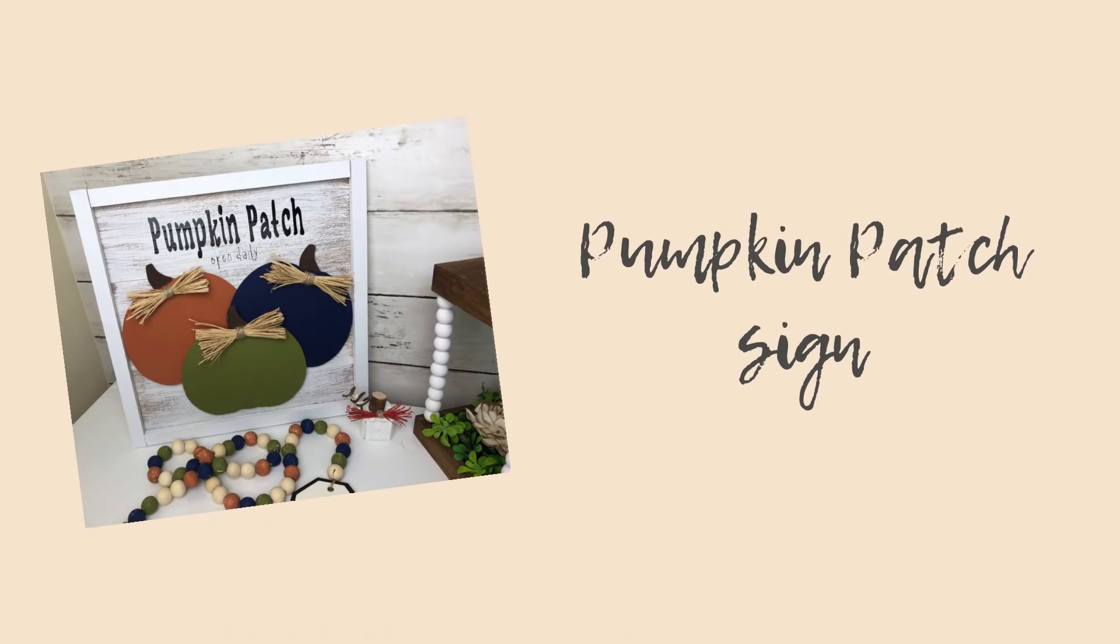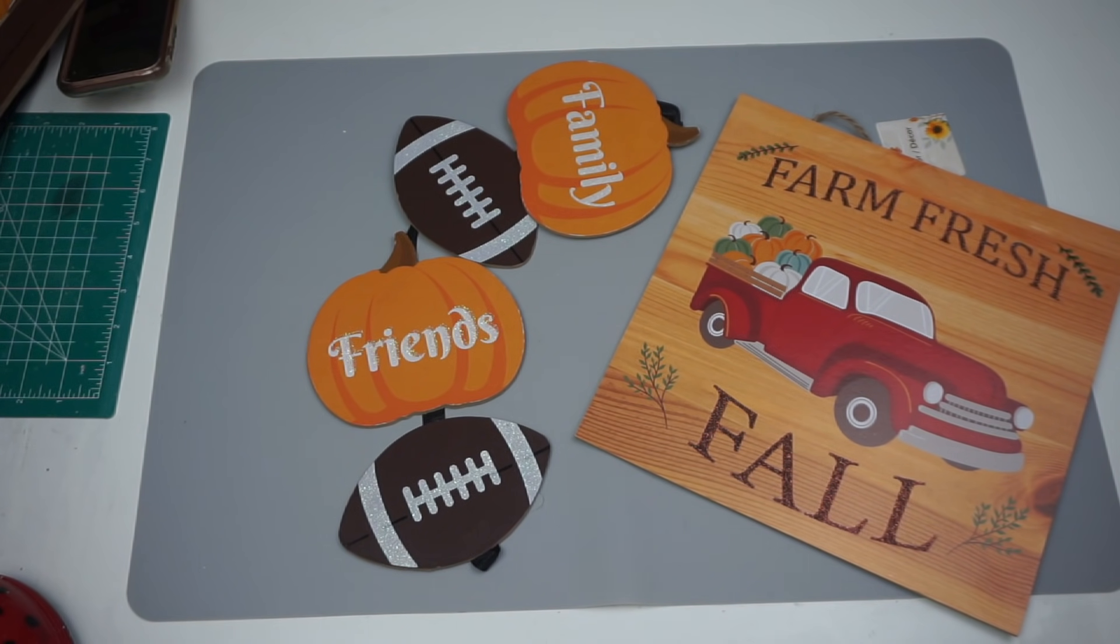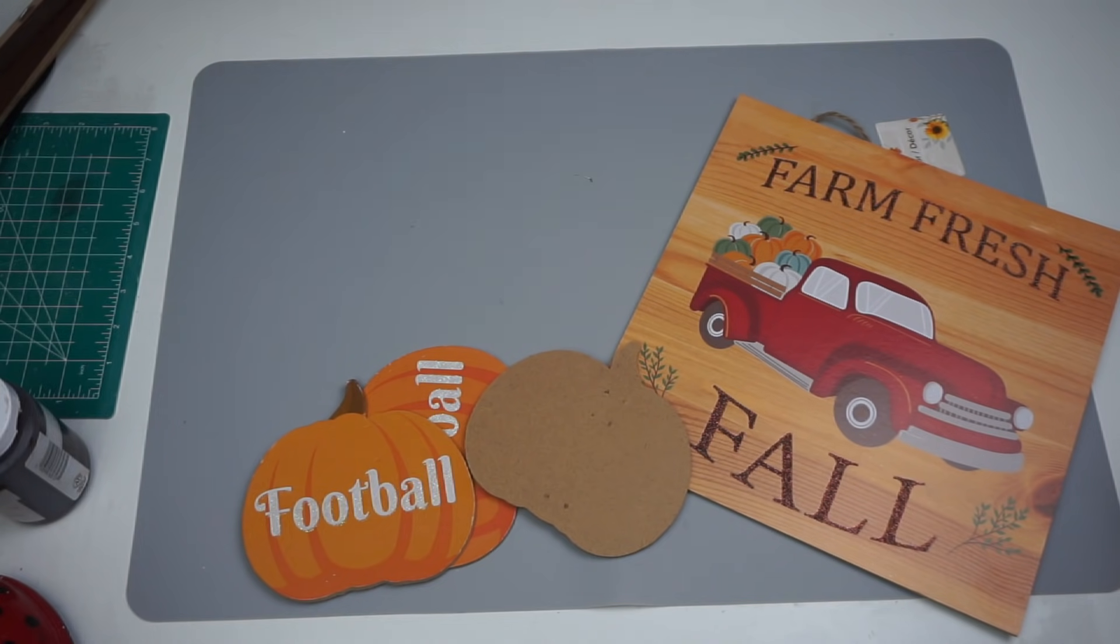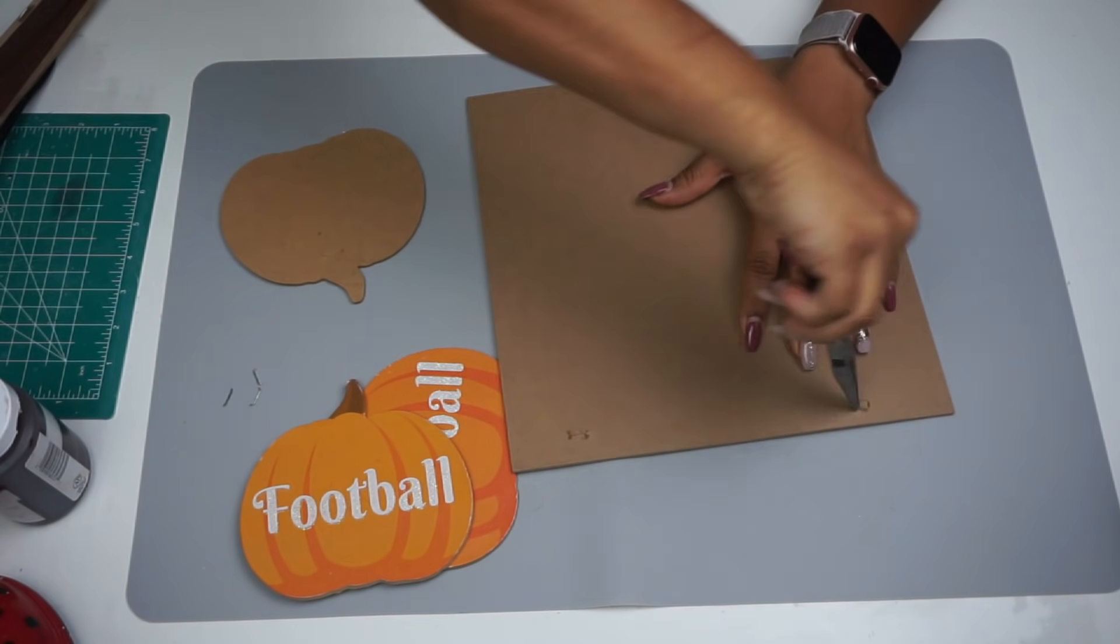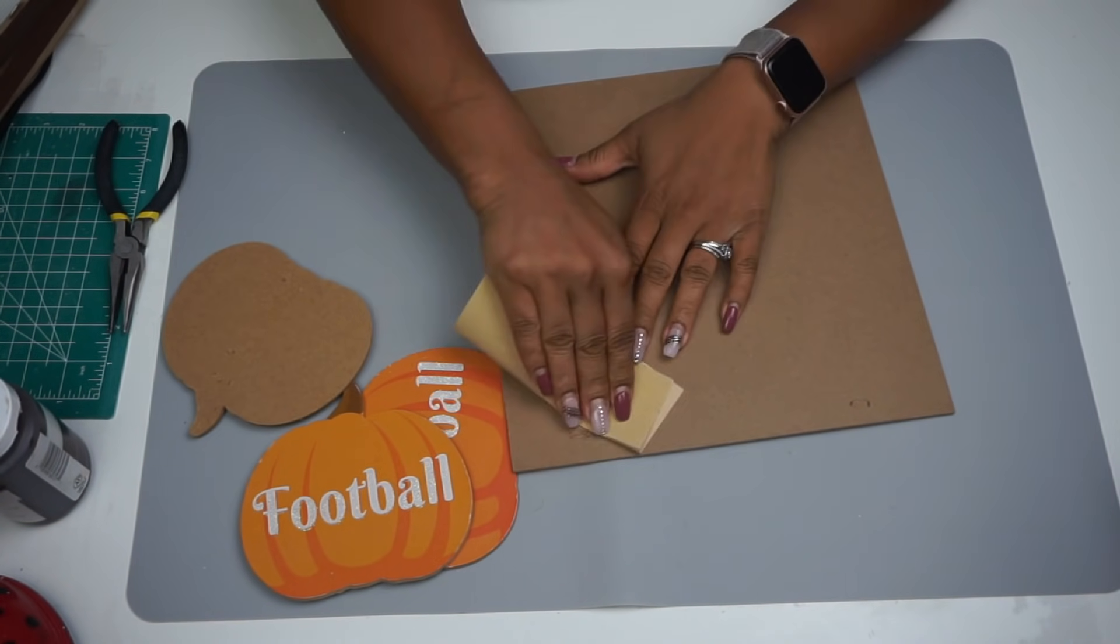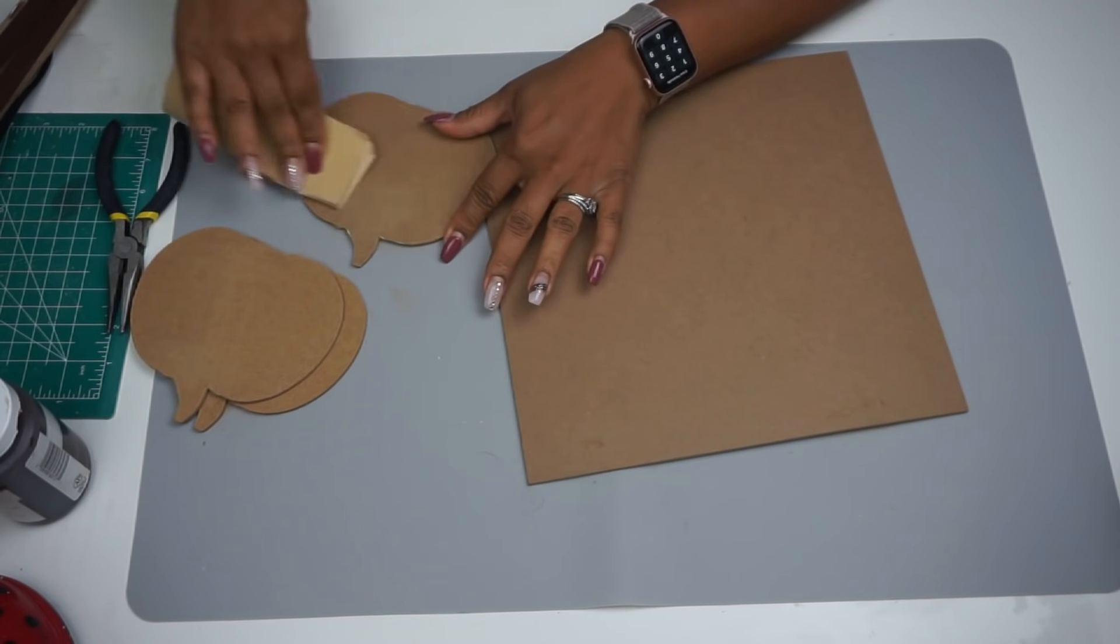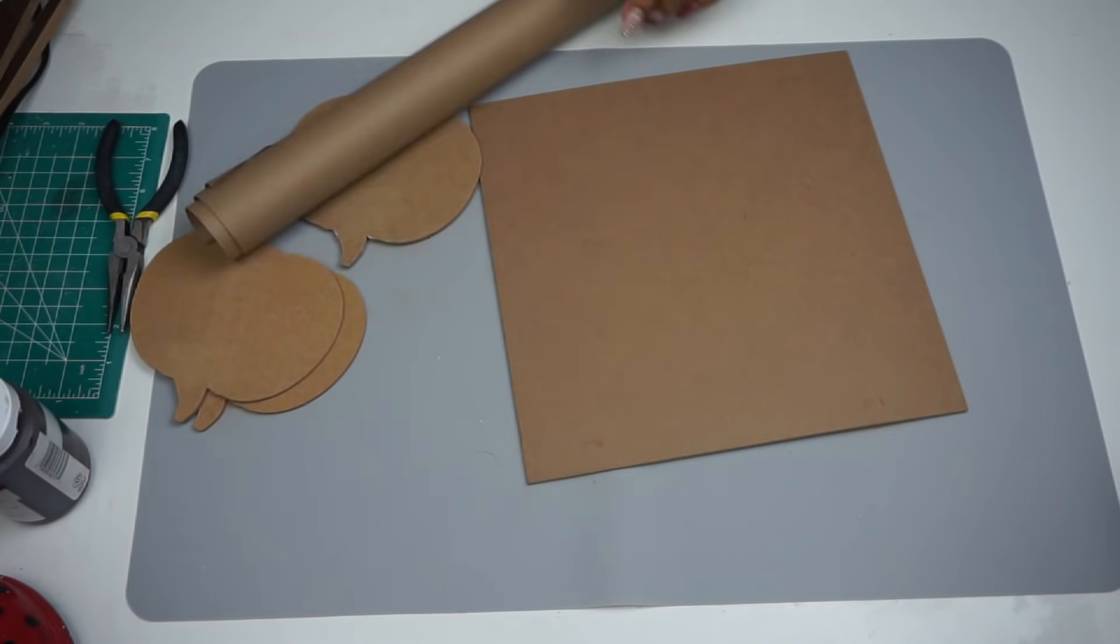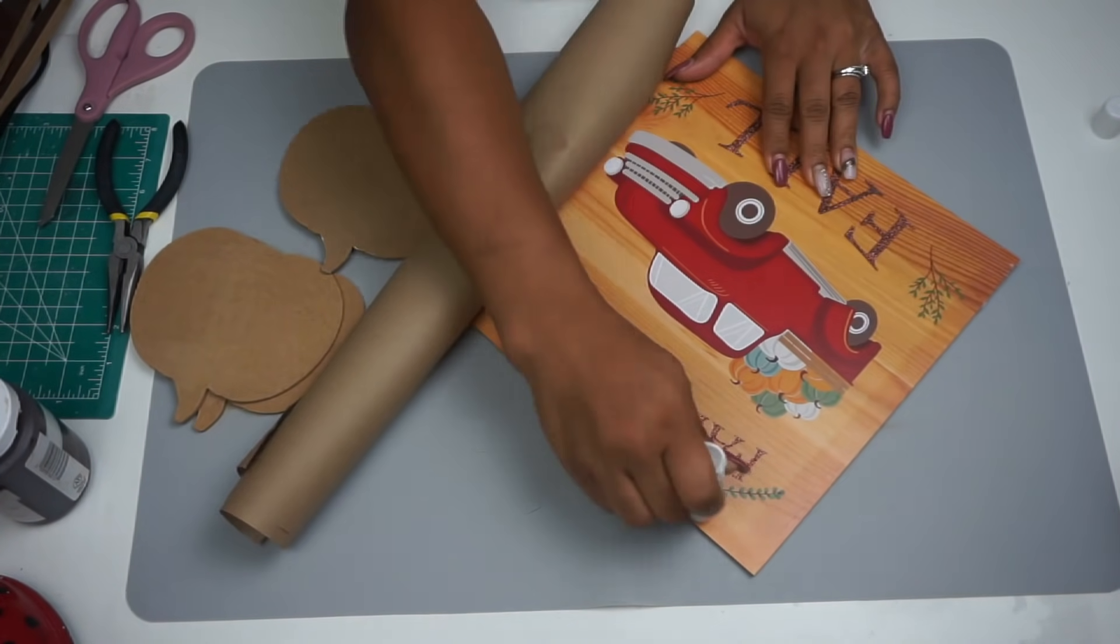Next, we have this really pretty fun pumpkin patch sign. So, from Dollar Tree, I have this Farm Fresh Fall sign with a red truck. And then last year, they had this family, friends, and football thing. I've had it since last year and I just used it today for this one. So, the first thing I did is just remove the ribbon on the back. I'm just using three of those pumpkins. And then I just turned the sign over and removed the twine and the staples. And then, of course, I am going to use some brown craft paper to cover the front of the sign.